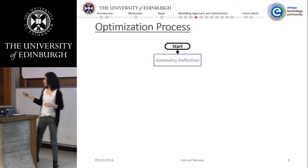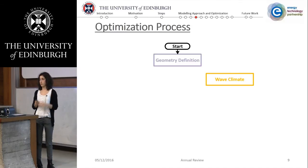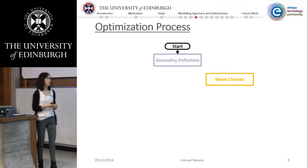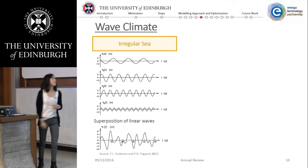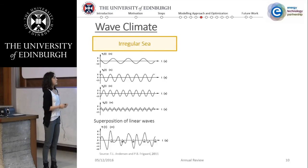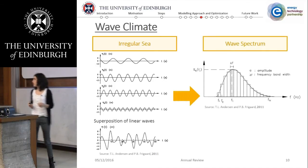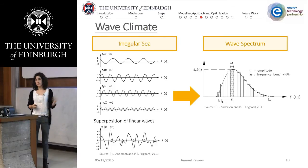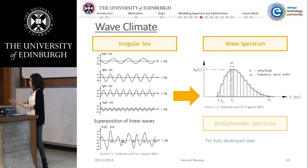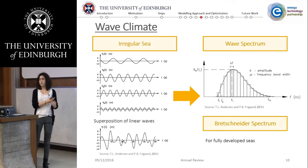Once we know how to define the geometry, we need to define the wave climate where we want to place the device to extract power. I'm using an irregular sea represented by the superposition of various linear waves. The relation of amplitude to frequency is represented in a wave spectrum, and I'm using 200 frequencies to represent this wave spectrum with a Bretschneider spectrum, which is commonly used for fully developed seas.